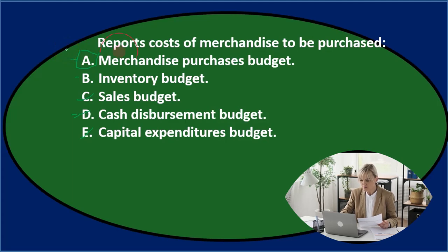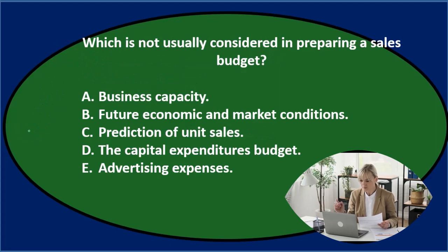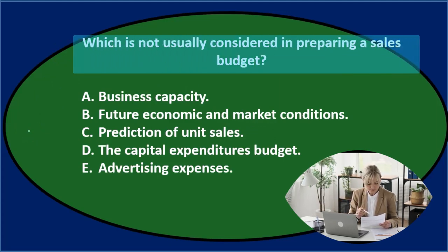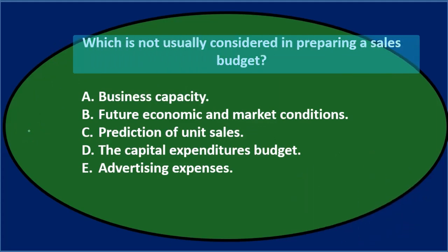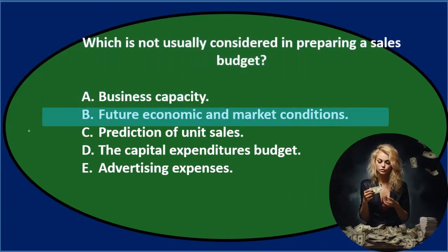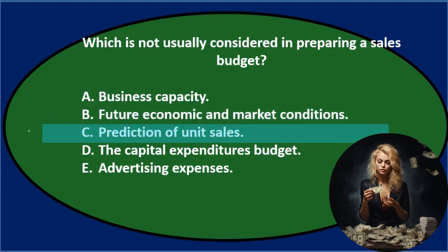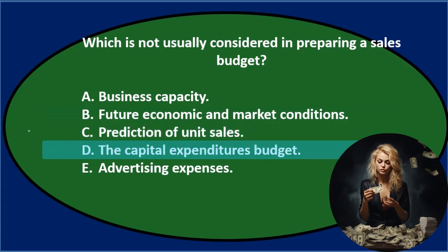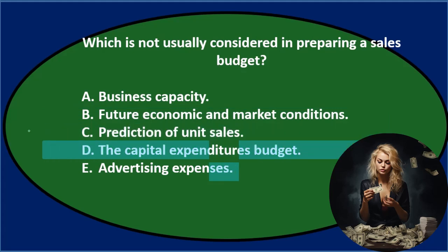Reports costs of merchandise to be purchased — A. Merchandise Purchases Budget. Next question: which is NOT usually considered in preparing a sales budget? A. Business Capacity. B. Future Economic and Market Conditions. C. Prediction of Unit Sales. D. The Capital Expenditures Budget. E. Advertising Expenses.